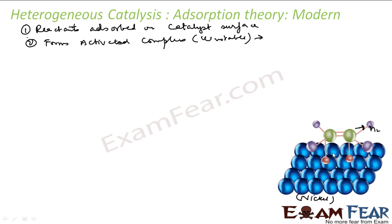This unstable activated complex forms a new molecule — the bond between hydrogen and nickel breaks, the other bonds break, and the alkane leaves the surface. This creates space for a new alkene or reactant to come in. We are looking at the hydrogenation reaction of alkene to alkane. A new alkene comes, occupies the surface, the activated complex forms again, it is unstable, and it forms alkane, which leaves the surface. The modern theory adds the concept of activated complex formation to the old theory.